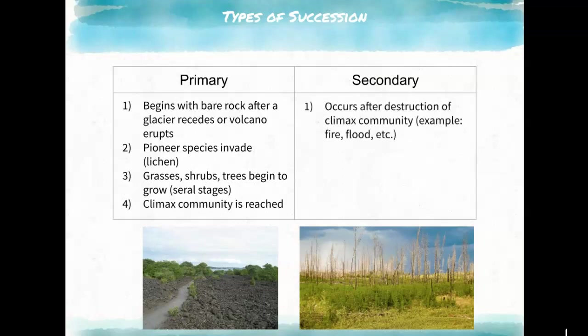Secondary succession is when the climax community gets destroyed — by fire, flood, or other events that kill all the plants. Unlike primary succession, it doesn't start with bare rock; soil is already present and plants just need to regrow. Secondary succession can happen within months to a few years, whereas primary succession may take hundreds of years because breaking down rock into soil is extremely slow.